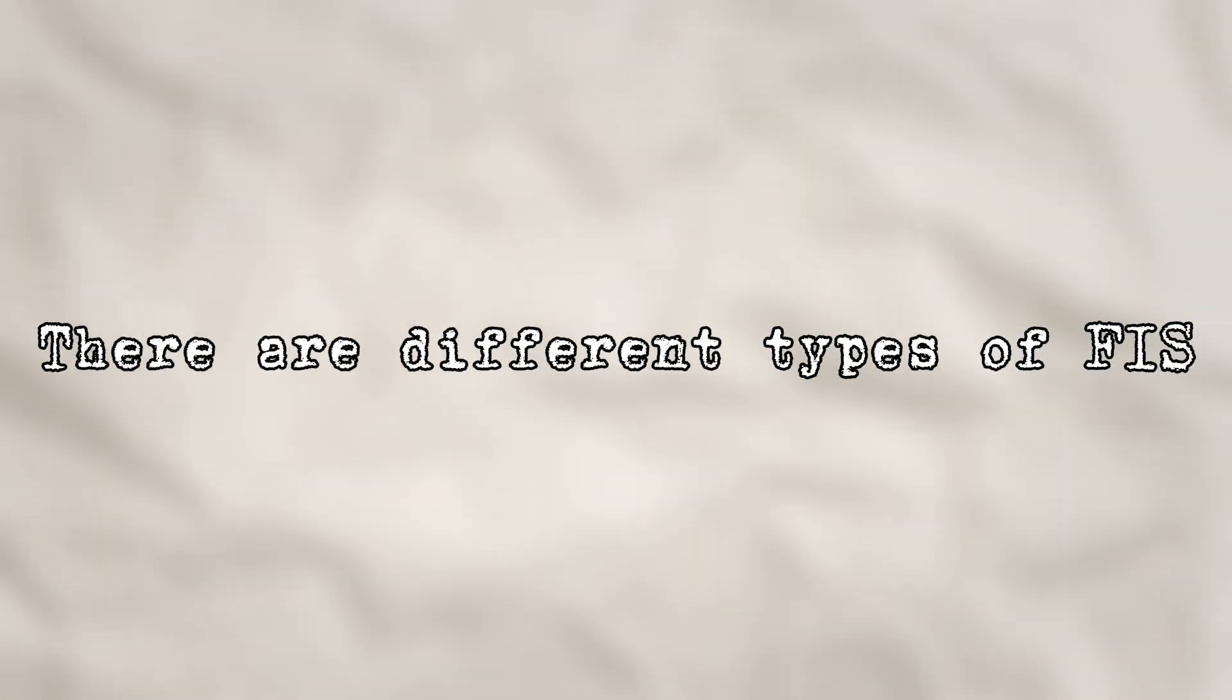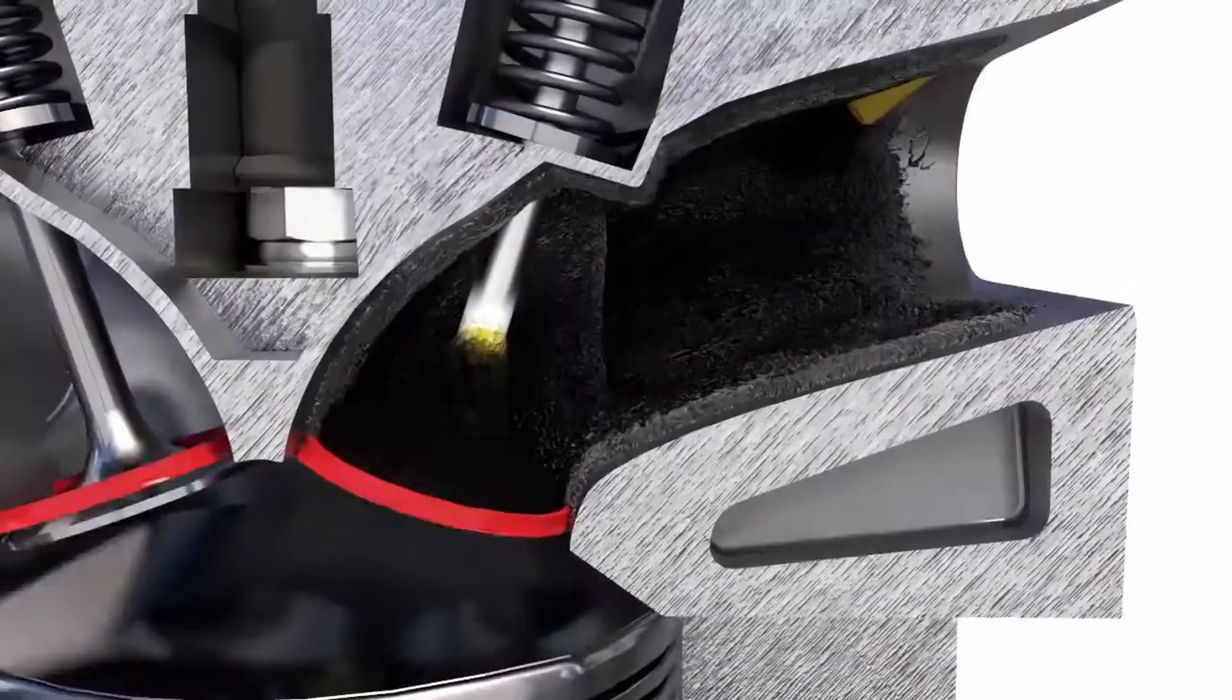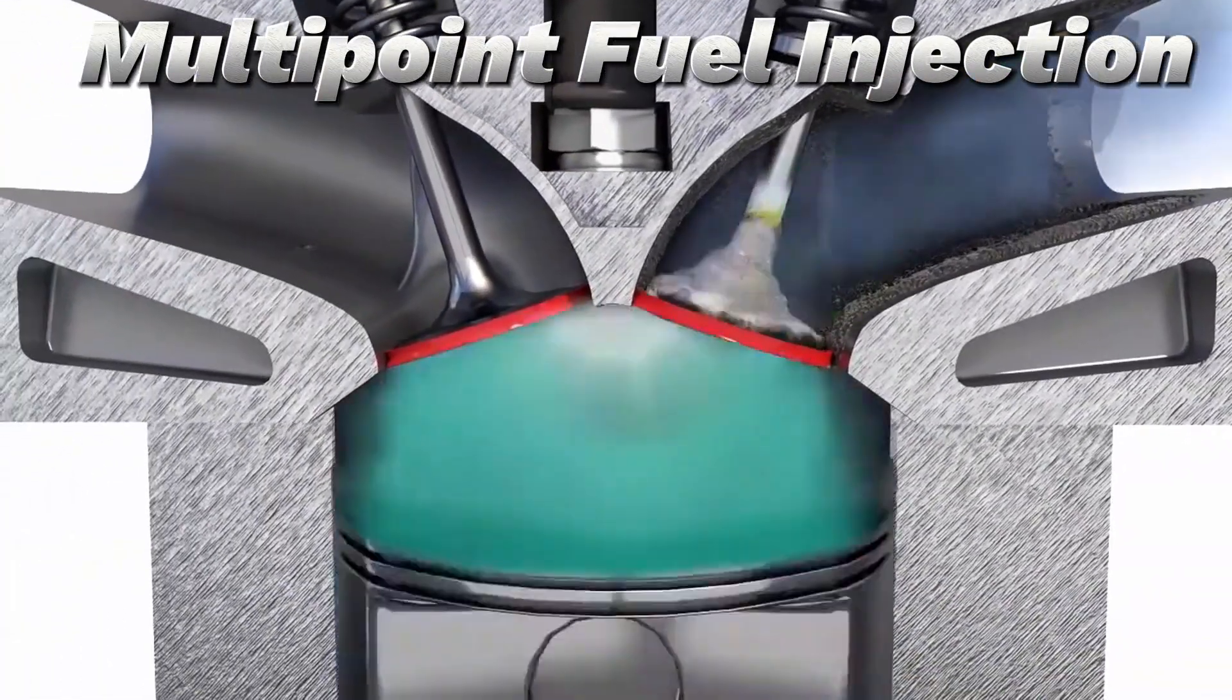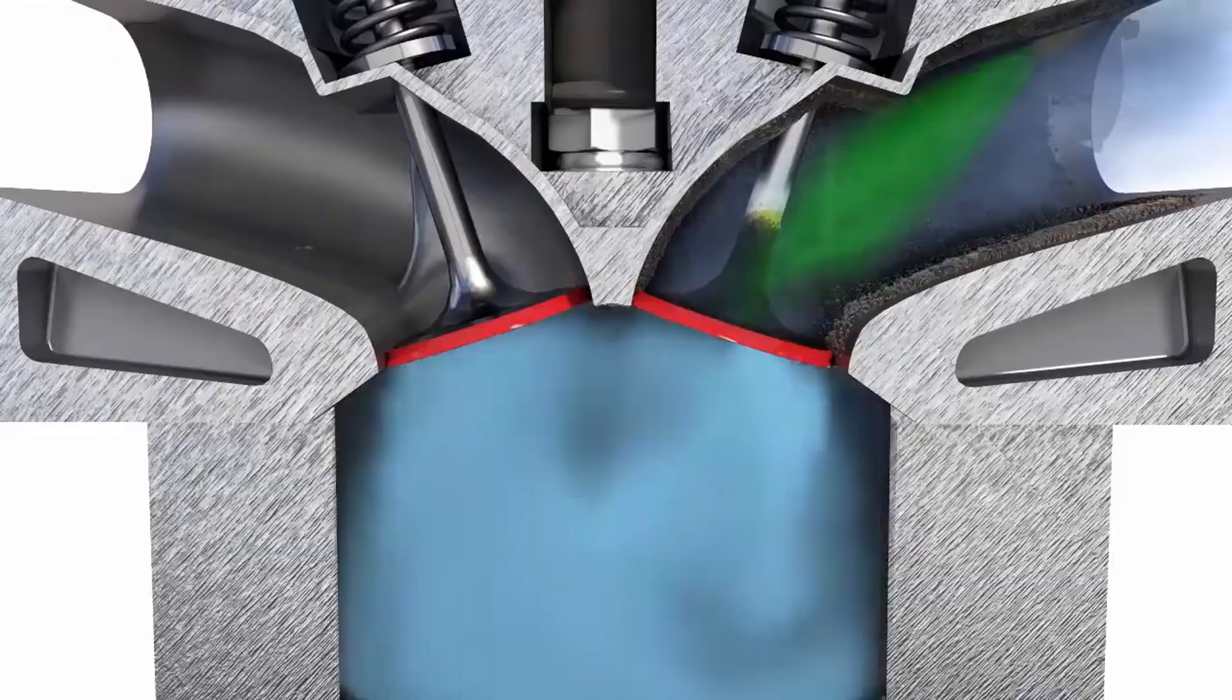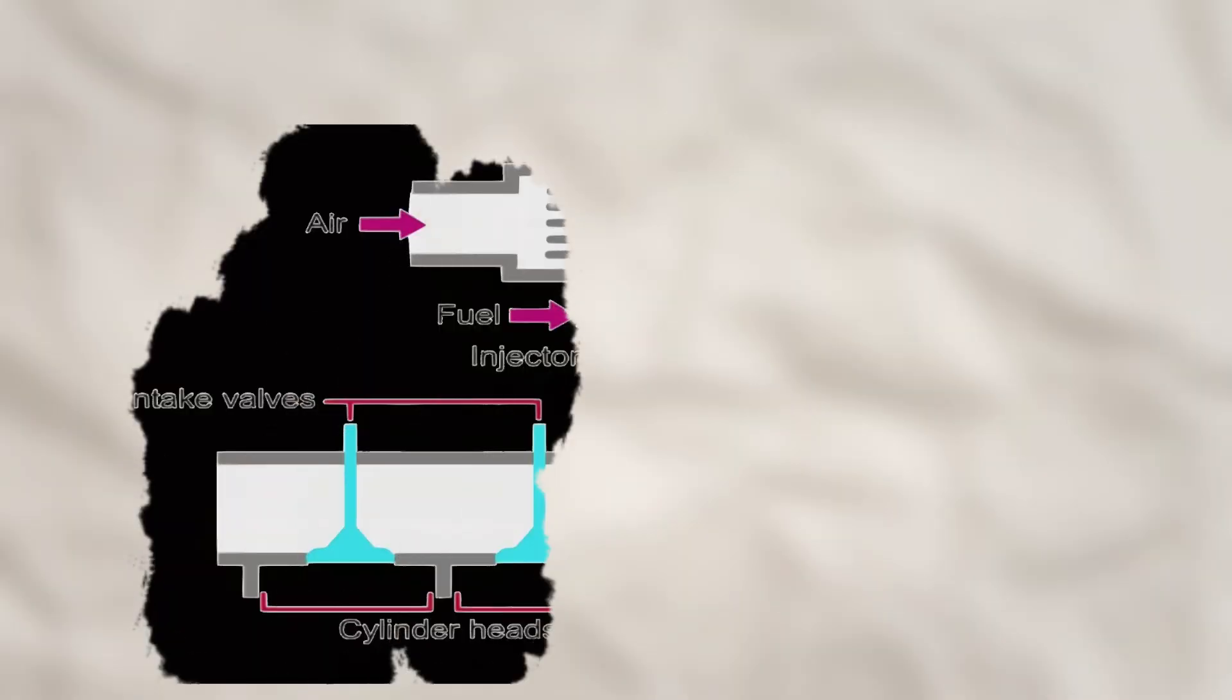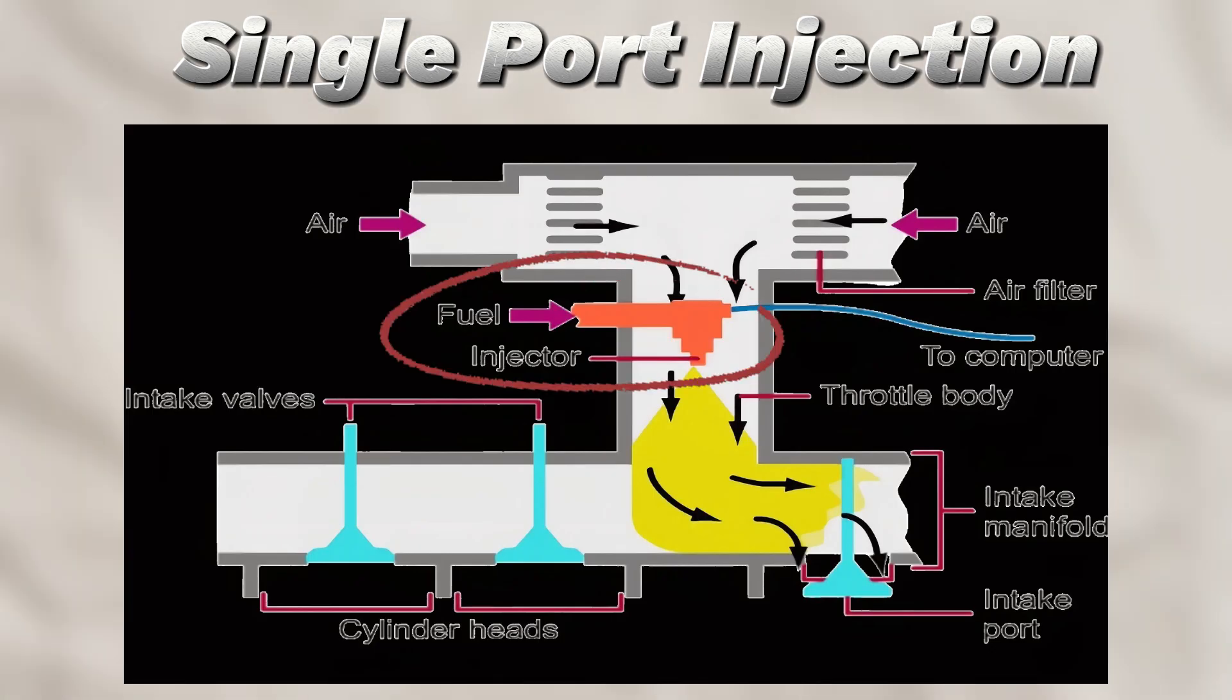There are different types of fuel injection systems too. The most common is multi-point fuel injection, where each cylinder has its own injector spraying fuel near the intake valve. This allows for better distribution compared to older single-point injection, where one injector handled everything.